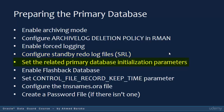You also need to set the related primary database initialization parameters, which we'll discuss shortly. Enable the flashback database — this is highly recommended. Set the control file record keep time parameter to retain more records than the default value. Configure the tnsnames.ora file so the primary and standby databases can see each other, and finally create a password file in the primary database if one doesn't exist.